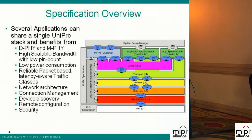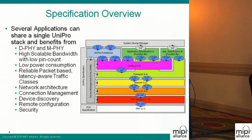All these different applications — you can have up to 15 additional functions in UniPro — are all sharing the same UniPro stack and the same physical layer, along with all the benefits of this protocol and PHY together. The benefits are in terms of bandwidth scalability and low pin count.